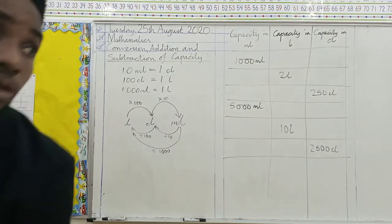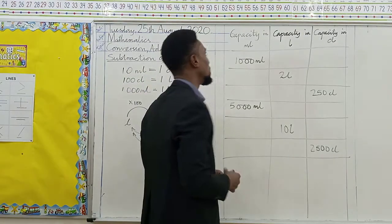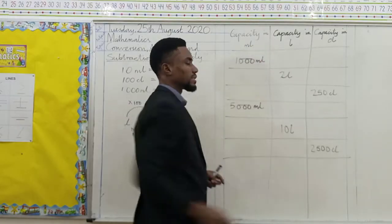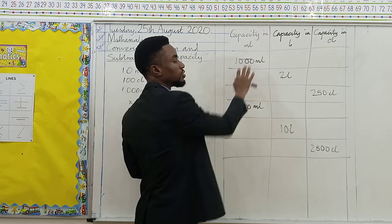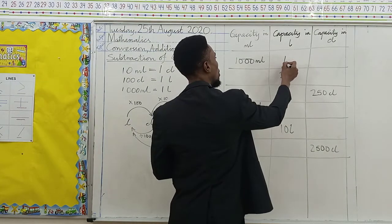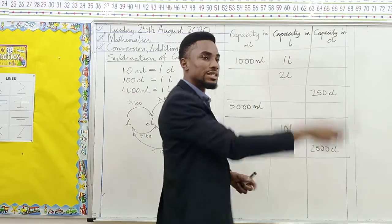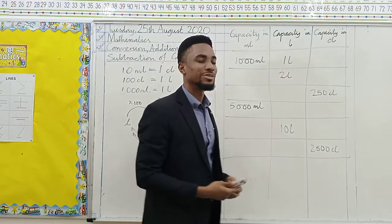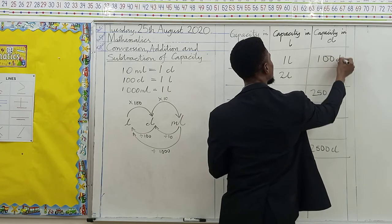Now let's fill the empty spaces with the equivalent capacities. 1,000 milliliters will give us what in liters? Changing from milliliters to liters, we divide by 1,000, which means we take away 3 zeros from the number. Taking away 3 zeros from 1,000, we're left with 1. So this gives us 1 liter. And then changing 1 liter to centiliters — liter to centiliters is multiplied by 100. So this is going to be 100 centiliters.